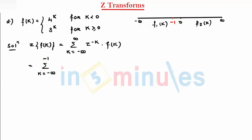first k equal to minus infinity to minus 1. From minus infinity to minus 1, that is, k less than 0, function is, 4 raise to k. And from 0 to infinity, function is, 3 raise to k. So, therefore, I say here, z raise to minus k, and, my f of k for this range is, 4 raise to k,